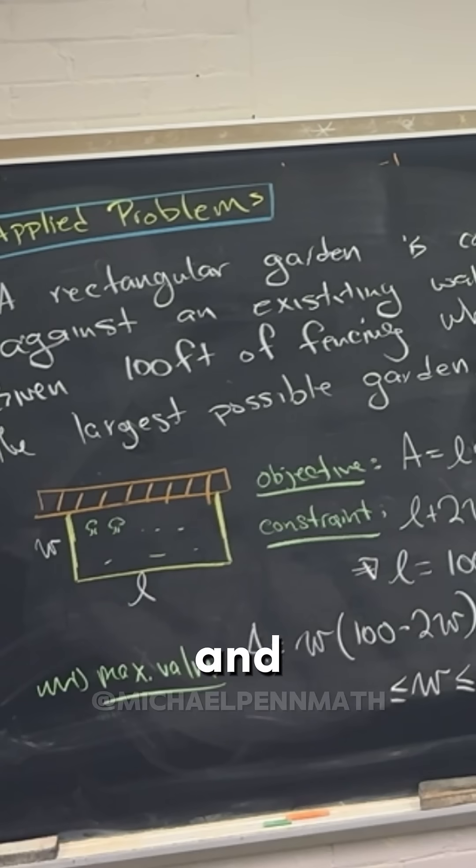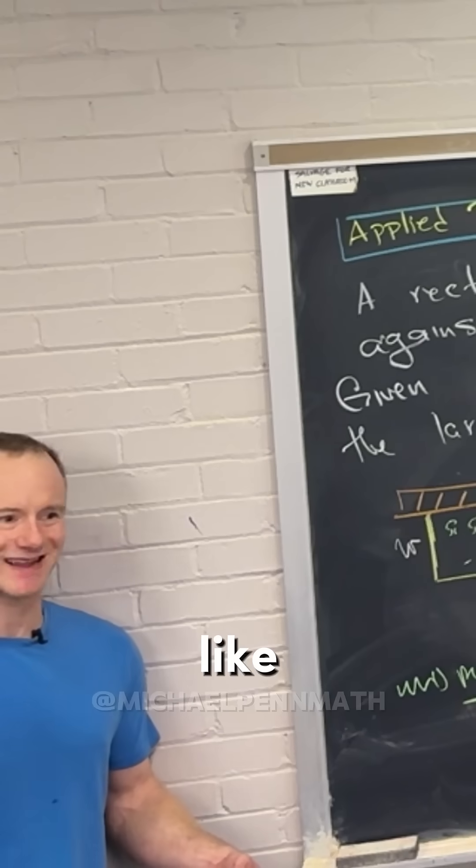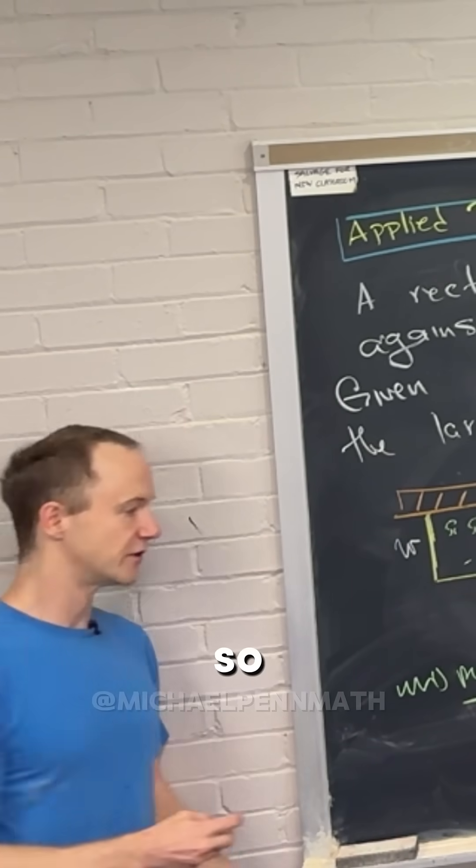Oftentimes when you're trying to create an interval for this kind of problem, you want to look at the silliest versions of the picture to find the endpoints. So the silliest thing on the low end would be zero.